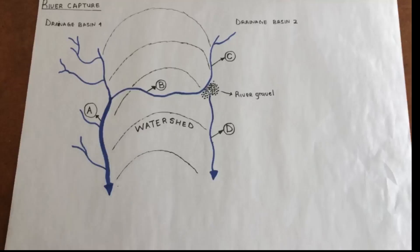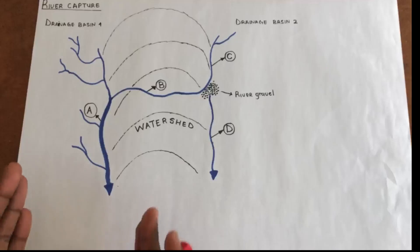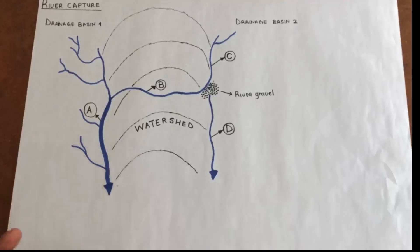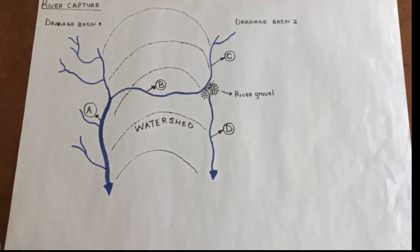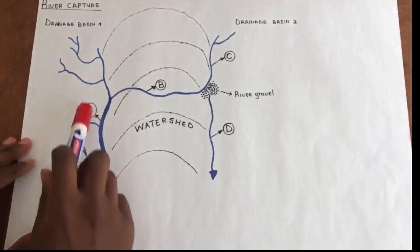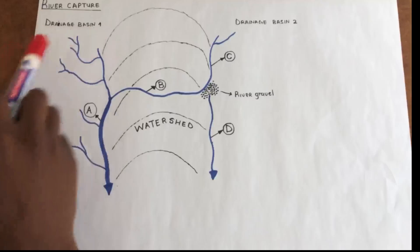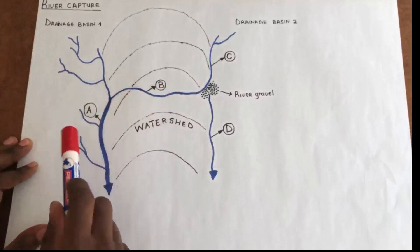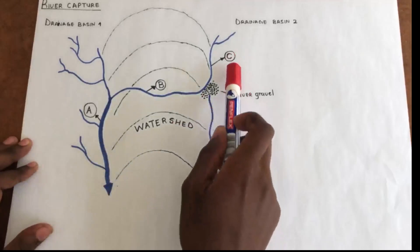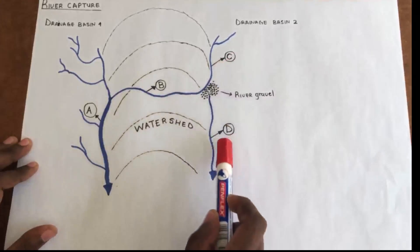I'm going to draw a diagram to assist in explaining the river capture concept. As you can see, we have streams A, B, C, D, the watershed, river gravel, and an elbow. On this side we have stream A, or river A, from drainage basin one. We also have stream B, which has emerged from stream A — I'll explain that shortly. We also have stream C and stream D from drainage basin two.